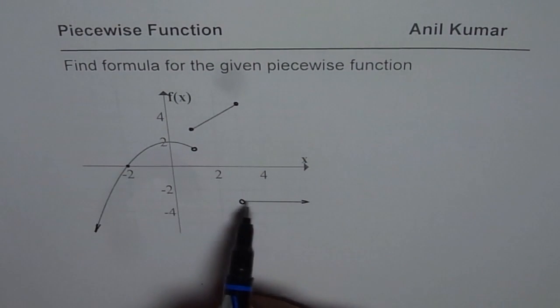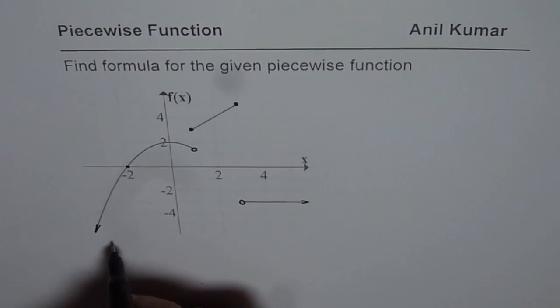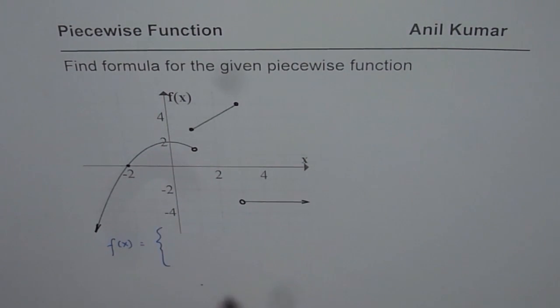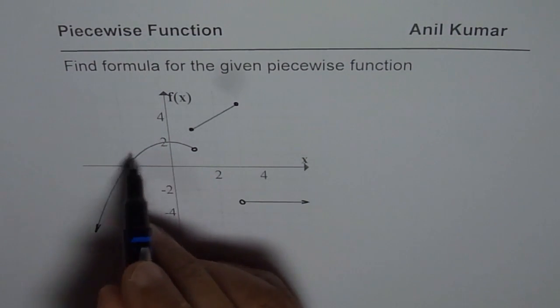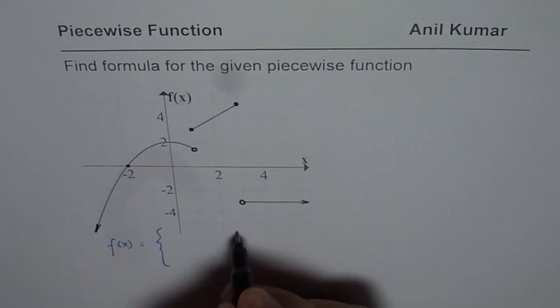Now here we have three pieces in the function. So we have a piecewise function f of x which could be written as combination of three functions. One of these functions is a parabola. We will first write the interval.